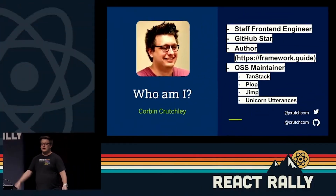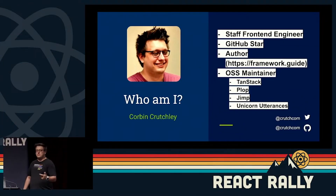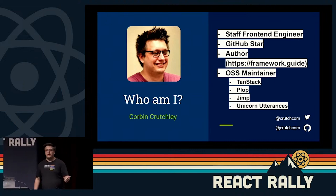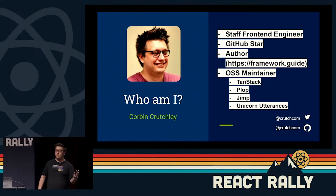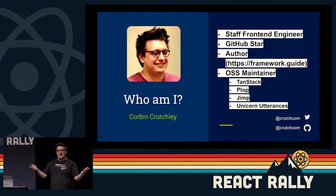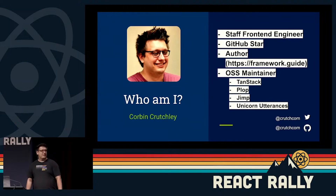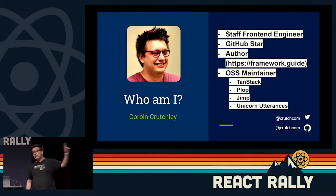Welcome, Park City. Thank you all for having me. My name is Corbin Crutchley. I am a staff front-end engineer at Descript. I'm a GitHub star. I'm an author of a book called The Framework Field Guide, which teaches React, Angular, and Vue all at the same time. I maintain other projects such as Plop, Jimp, and what used to be called Unicorn Utterances.